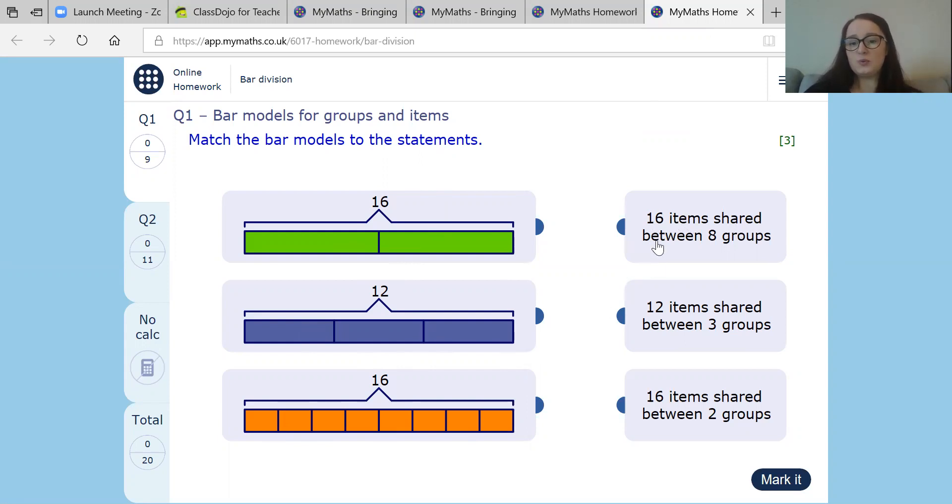So this one says 16 items shared between eight groups. Now I know this one is 16 items and it's put into eight little groups here. So I'm going to click on this one and this one and it's going to draw the line. The next one, 12 items shared between three groups. Well, this one's a 16 and this one is 12 and this one's 12 split into three groups. So it's going to be this one. Then there is only one left, but we will double check it just to make sure. So 16 items shared between two groups. So 16 and it's shared between two groups. So let's match them. Once you've done it, you can press mark it and see if you've got it right. Super, missed indeed.